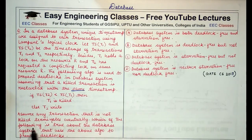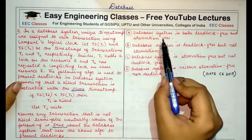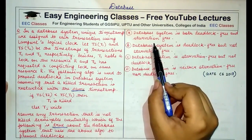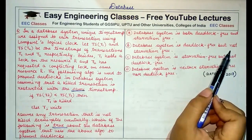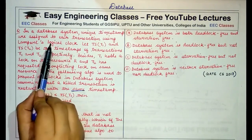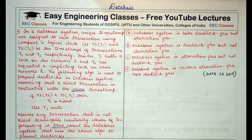Assume any transaction that is not killed terminates eventually. Which one of the following is true about the database system that uses this algorithm to prevent deadlocks? First of all, Lamport's logical clock — if timestamps are assigned to transactions using Lamport's logical clock, this simply means that timestamps are given to transactions in the order in which they appear.